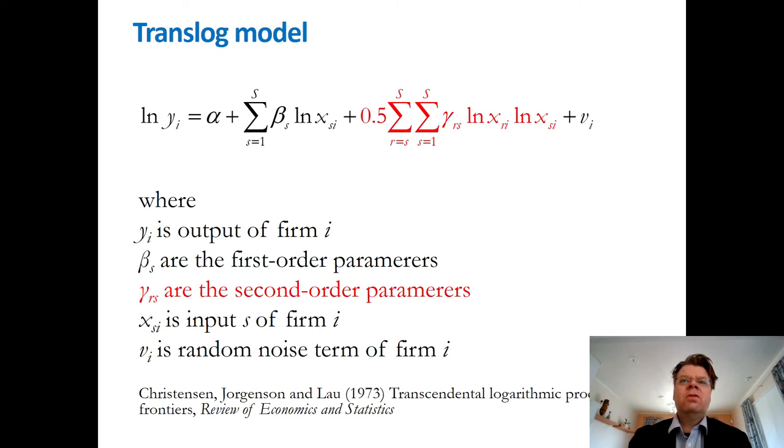It can be shown that this translog functional form is able to estimate also the substitution elasticity. This is why D-word refers to the translog and similar functional forms as second order flexible. However, we then, by using the translog extension, we then lose the appealing interpretation of those beta parameters as the output elasticities.